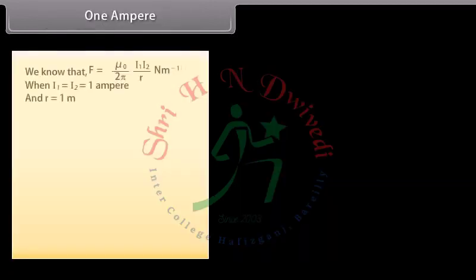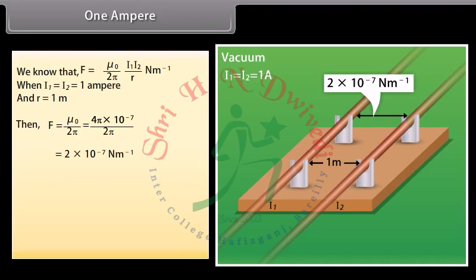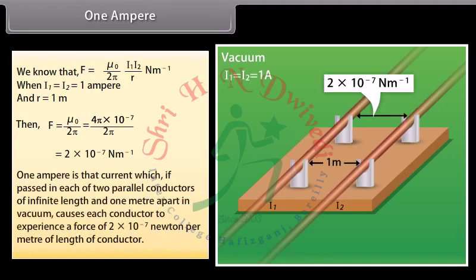One ampere: We know that F = (mu-0 / 2 pi) × (I1 I2 / R). When I1 = I2 = 1 ampere and R = 1 meter, F = 2 × 10⁻⁷ newton per meter. Therefore, 1 ampere is that current which, if passed in each of two parallel conductors of infinite length and 1 meter apart in vacuum, causes each conductor to experience a force of 2 × 10⁻⁷ newton per meter of length.